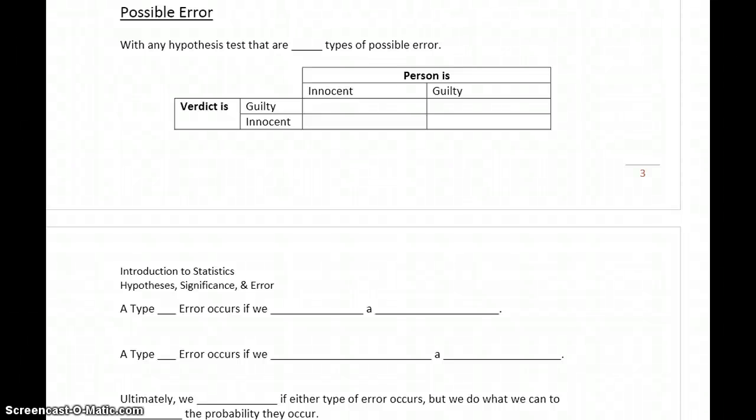Keep in mind that during the process of hypothesis testing, we're using sample data to try and draw conclusions about our population. We never know if we're right or wrong. We're basically making some hopefully very educated guesses, but that means there's the possibility that we could be wrong.